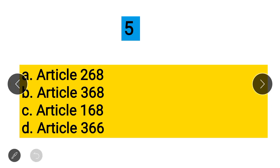Question 5: Under which Article of the Indian Constitution is the amendment procedure provided? Option A: Article 268, Option B: Article 368, Option C: Article 168, Option D: Article 366. The correct answer is Article 368.